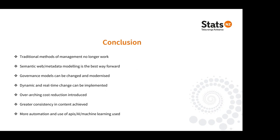To finish up: it's obvious that traditional methods of classification no longer work. Semantic web metadata modelling is the best way forward. We need to modernise and change our governance models and take them away from a very bureaucratic hierarchical approach. We will be able to bring in dynamic and real-time change, and the ultimate goal of cost reduction is around doing ourselves out of a job — eventually if all this works, there's probably no need for classification experts because it can be automated through AI, machine learning and algorithms.